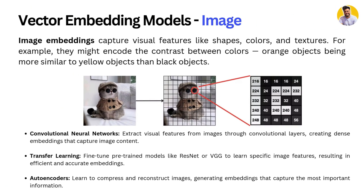First is image embeddings. In image embeddings, we capture visual features like shapes, colors, and textures from each pixel of the image to create those embeddings. For example, they might encode the contrast between colors — orange objects being more similar to yellow objects than to black objects. You can create embeddings from a cat photo, from each pixel as well. We use models like CNNs, transfer learning with fine-tuned models, and autoencoders.